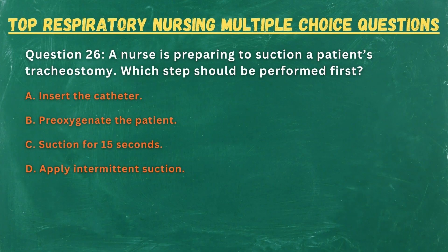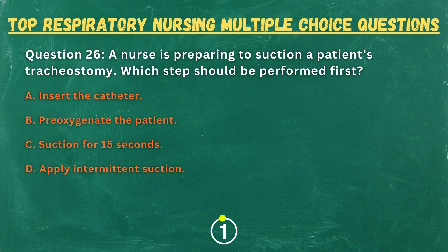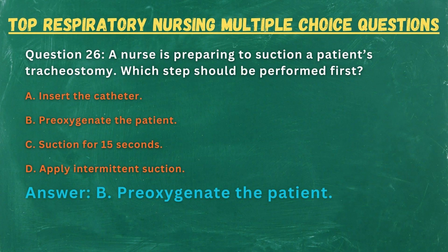Question 26. A nurse is preparing to suction a patient's tracheostomy. Which step should be performed first? A. Insert the catheter. B. Pre-oxygenate the patient. C. Suction for 15 seconds. D. Apply intermittent suction. Answer: B. Pre-oxygenate the patient.